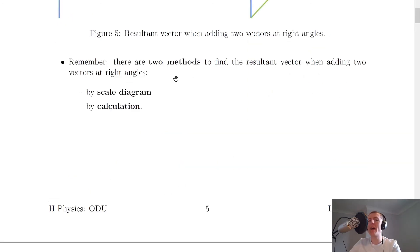Lastly, remember there are two methods to find the resultant vector when adding two vectors at right angles. We can use either the scale diagram method or the calculation method. Remember for the scale diagram method, you'll need to use a ruler and a protractor to find your angle, and you need to choose a scale first of all.